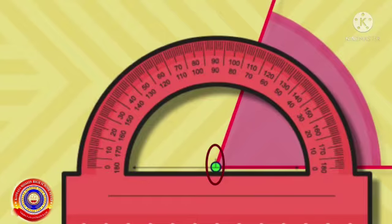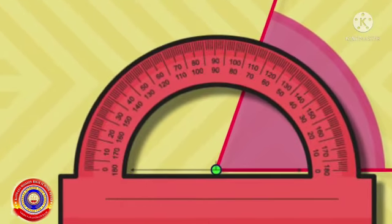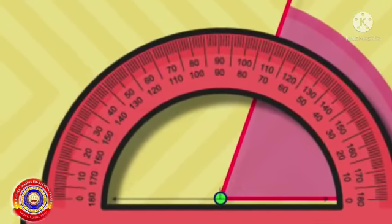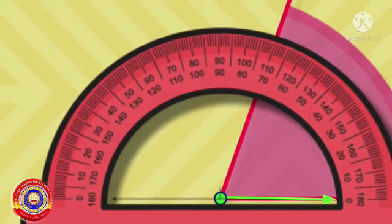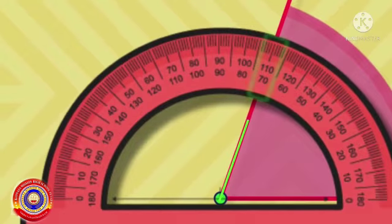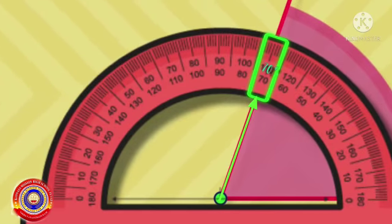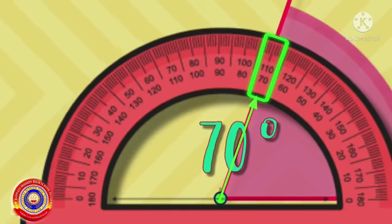The midpoint of the baseline is called the center point. Place the center point of the protractor over the vertex of the angle, and place the base exactly on the baseline of the angle. Now look at the arm of the angle that points to 0 on the baseline — it points to 0 on the inner scale. Then we need to measure the angle on the inner scale. Look at the other arm of the angle — it points to 70 degrees on the inner scale. So the measure of this angle is 70 degrees.